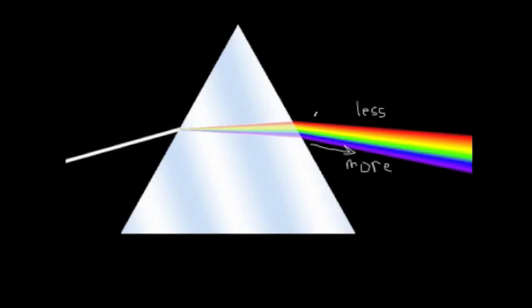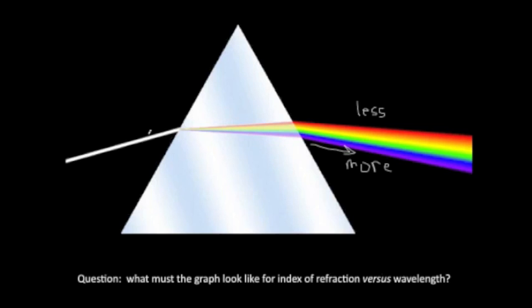If the index of refraction of glass were just a constant, then all these different colors would bend by the same amount, and I'd still have a white light beam coming out just as I had a white light beam going in. But the fact is that the index of refraction of glass is not constant versus wavelength — it varies a little bit. I'd like you to pause this video momentarily and sketch for yourself what you think a graph of index of refraction on the vertical axis versus wavelength on the horizontal axis would have to look like in order to generate the kind of color separation you see here.